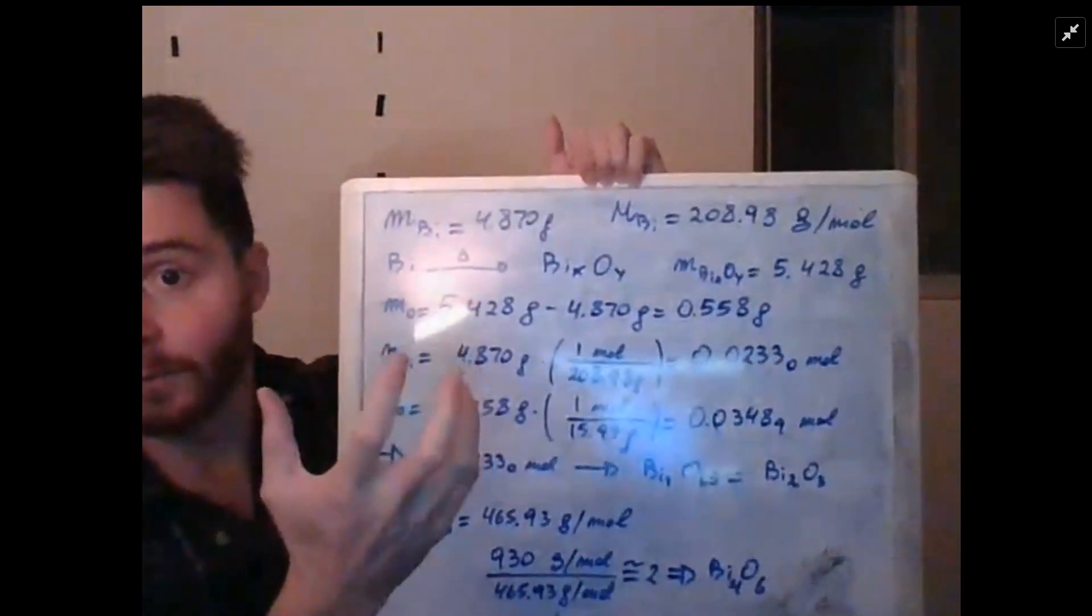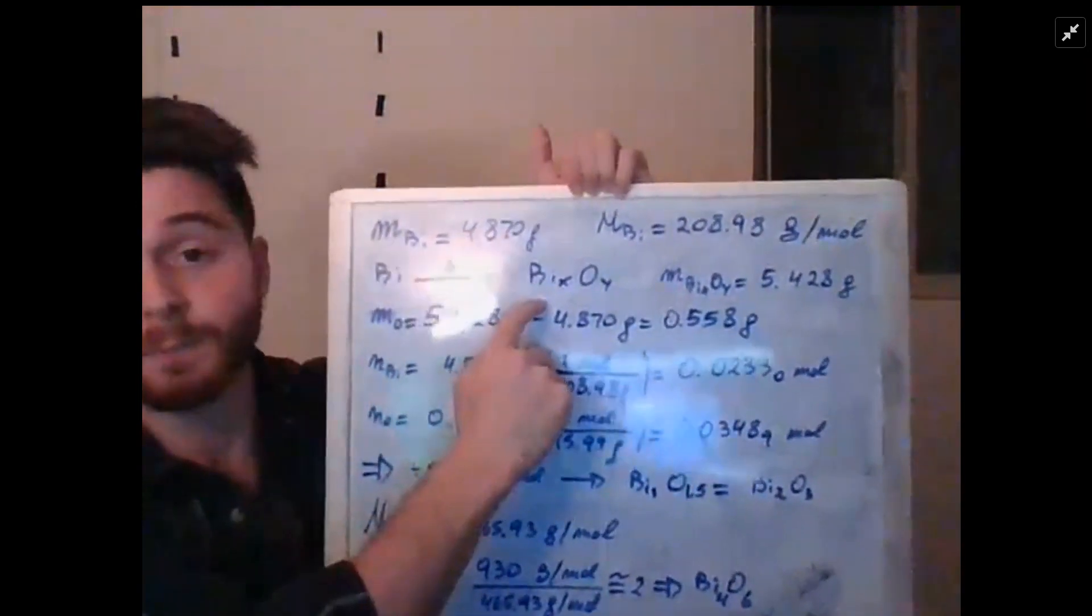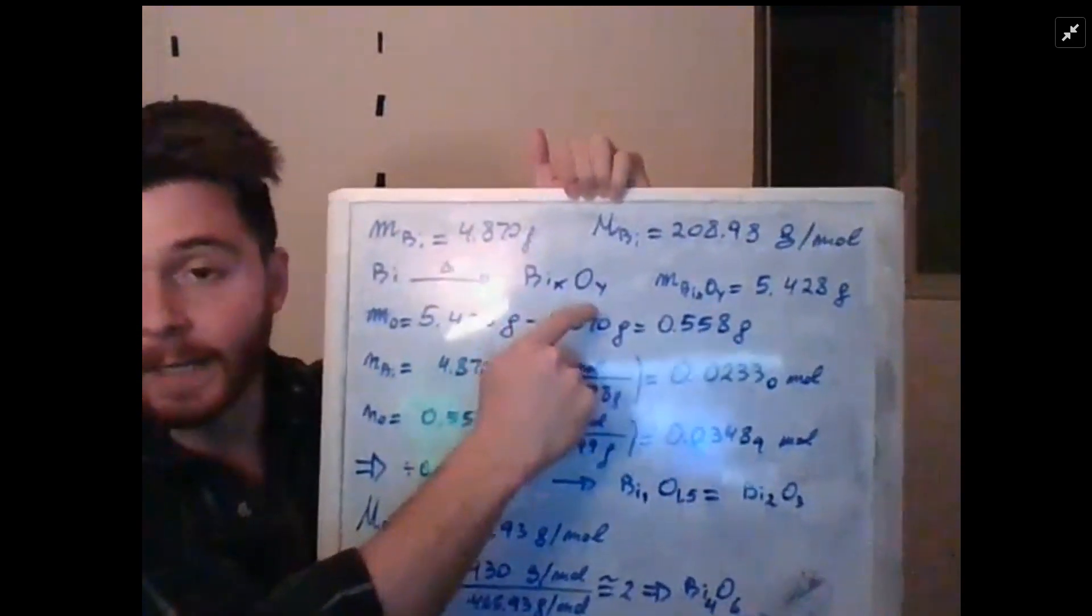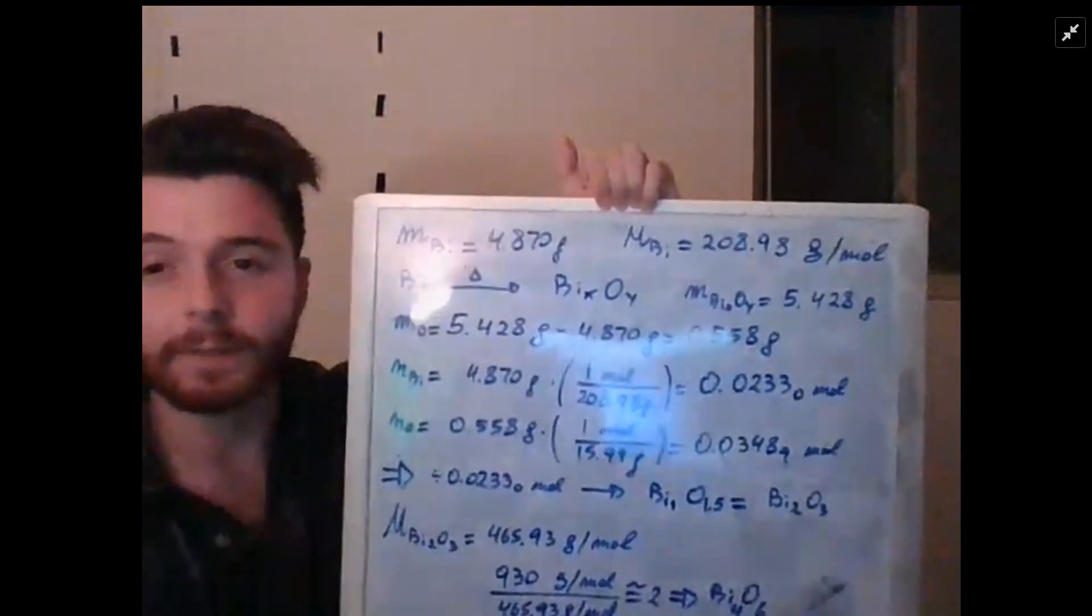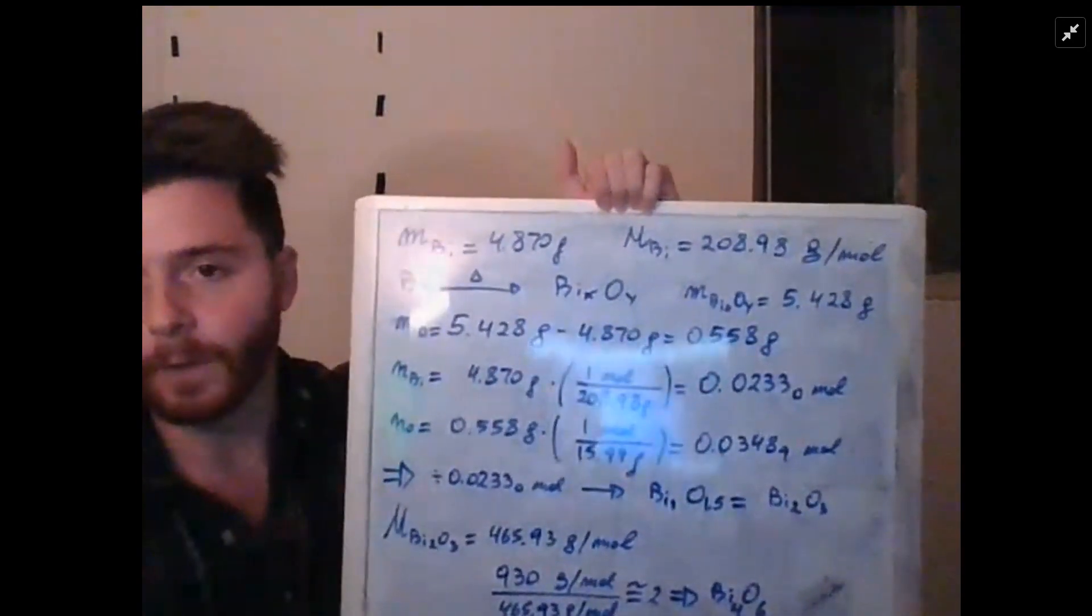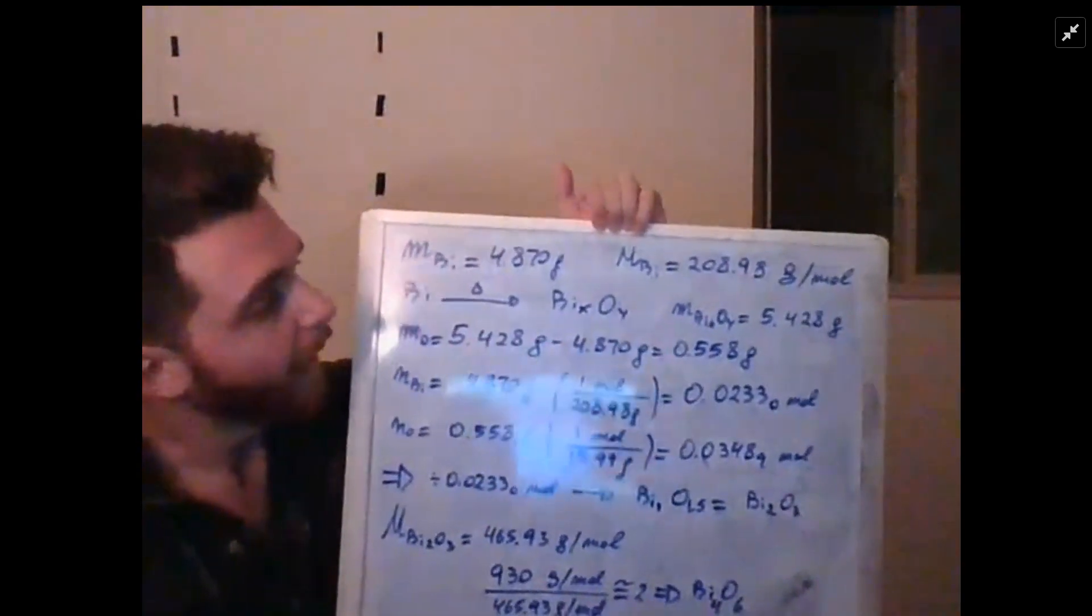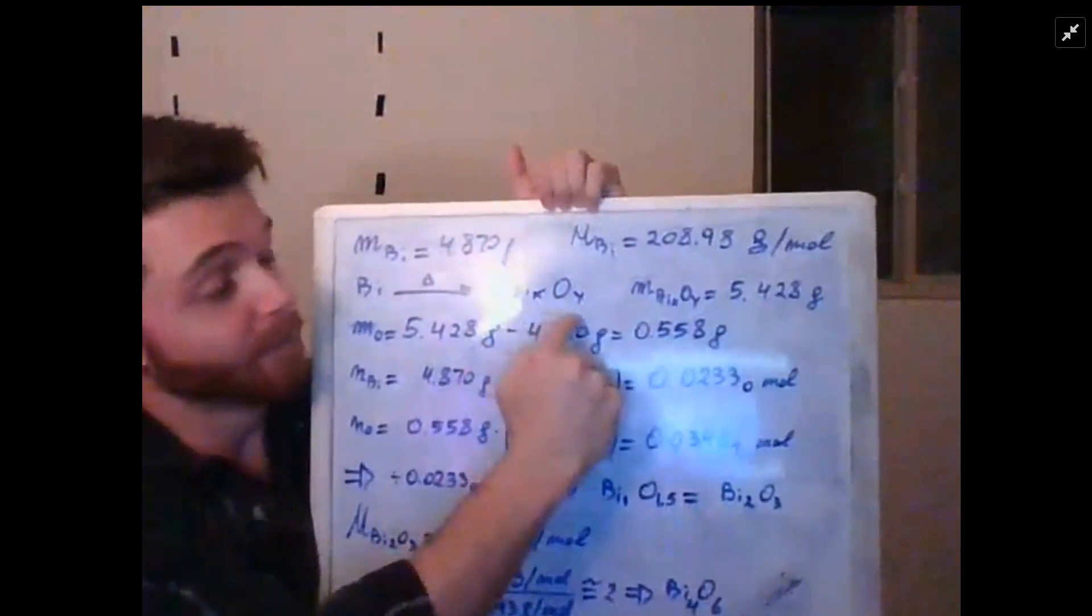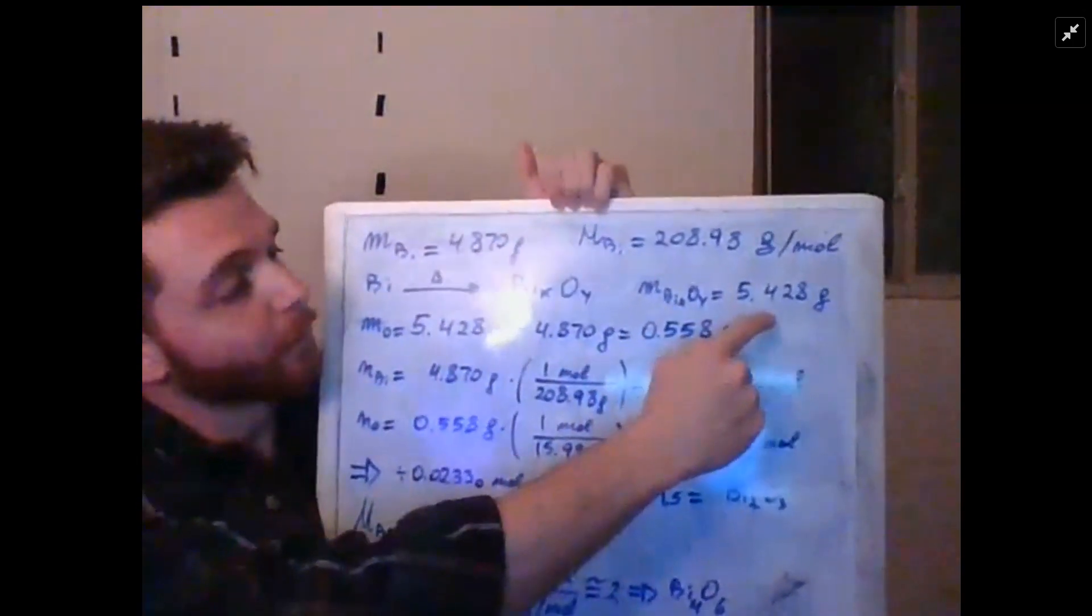We heat up bismuth metal in a crucible and we form bismuth oxide. This notation BiₓOᵧ is to note the fact that we don't know what the stoichiometric amounts are—it's just a simple mathematical expression. We know that the final mass that we get of this bismuth oxide is 5.428 grams.